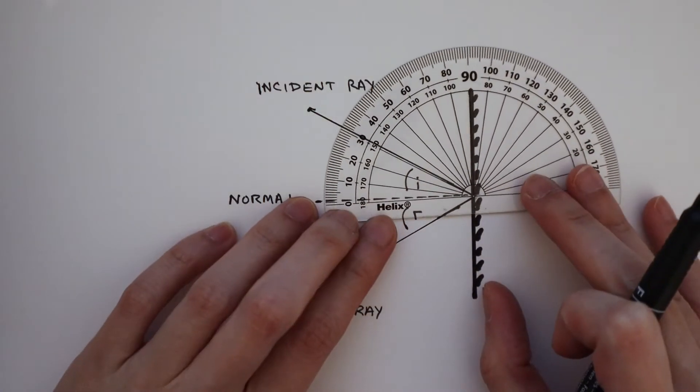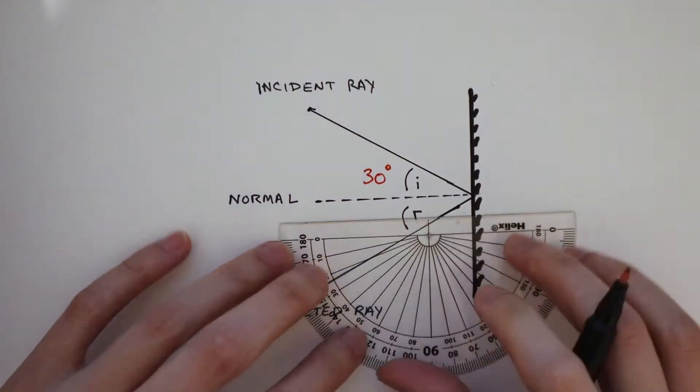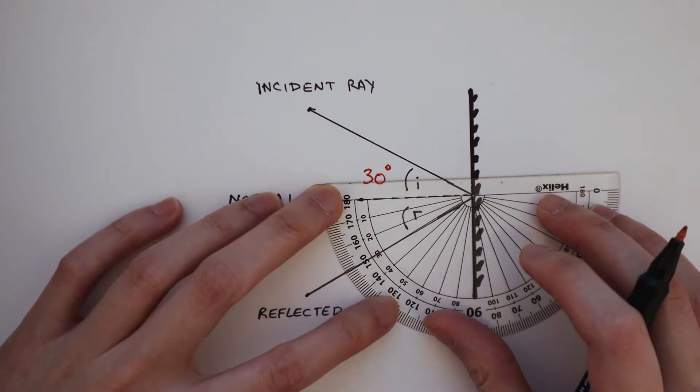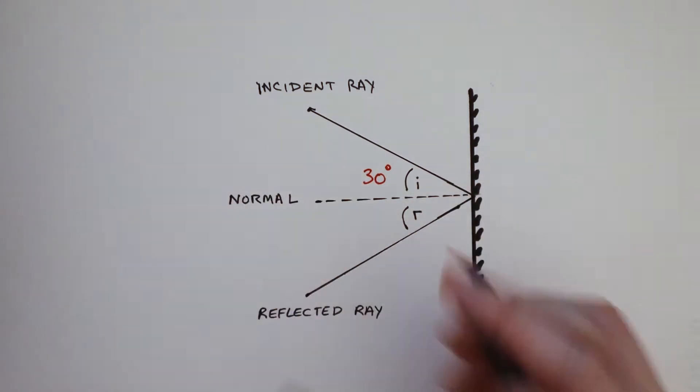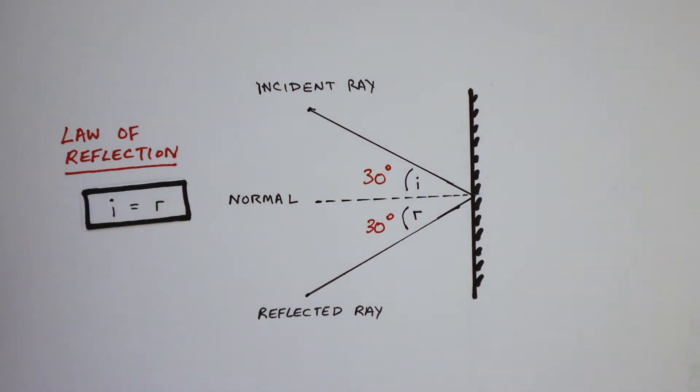The angle that the reflected ray makes with the normal is known as the angle of reflection R. The angle of incidence here is measured to be 30 degrees and the angle of reflection is also 30 degrees. This confirms the law of reflection which says that the angle of incidence is always equal to the angle of reflection.